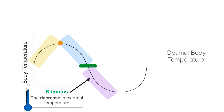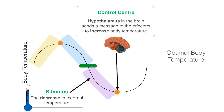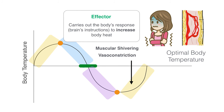What about decreasing body temperature? Well, it plays out exactly the same except in reverse. The stimulus detects a decrease in external temperature. The thermoreceptors in your skin detect this temperature decrease and message the brain. The hypothalamus sends a message to the effectors to increase body temperature, and the effector carries out the body's response to increase body heat. The result is muscular shivering or vasoconstriction, which is when blood vessels constrict to minimize heat loss via the epidermis. At this point, it's probably best to get some clothes on or stand next to a heater.